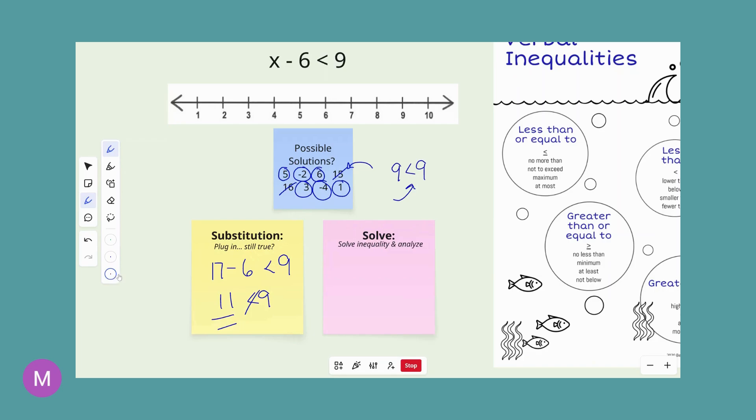The other way that you can check if numbers are a possible solution is to actually solve the inequality. And now that you know how to solve one-step algebraic equations, you can solve one-step algebraic inequalities as well. So let's check this method, which might feel like much less work. So we need to isolate the x. We need to move that negative 6, so we need to do the opposite, add 6. What we do to one side, we do to the other. That cancels, leaving us with x is less than 15. So we need any number less than 15 will be possible solutions.